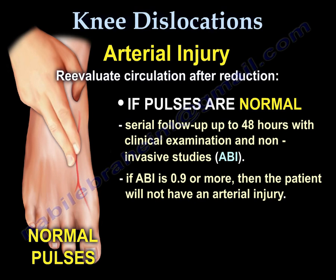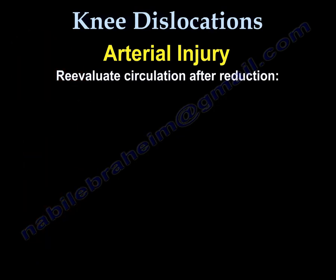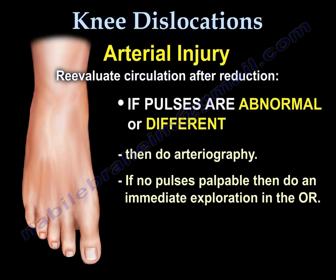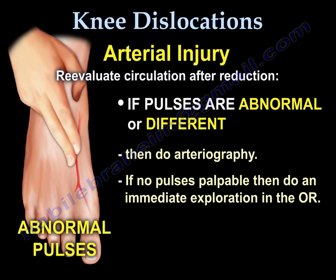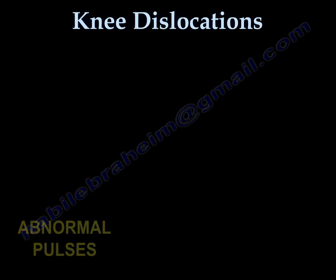Ankle-brachial index (ABI): If the ABI is 0.9 or more, the patient will not have an arterial injury. If pulses are abnormal or different, perform arteriography. If no pulse is palpable, perform an immediate exploration in the operating room.